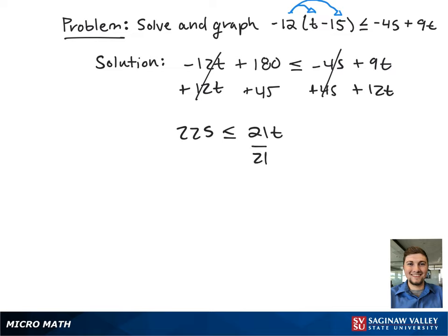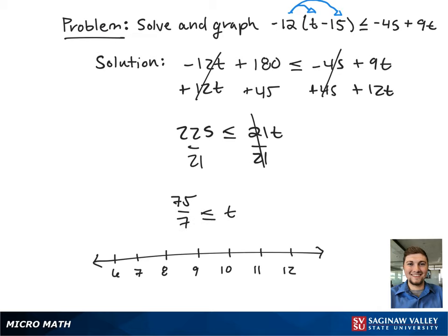Next we want to get t by itself, so we're going to divide both sides by 21. This reduces to 75 over 7 is less than or equal to t.